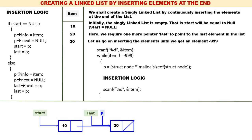Read the next item: 30. It is not equal to minus 99, so create a new node pointed by p. Start is not equal to null, so we execute the else part. p->info is equal to 30, p->next is equal to null. Last is containing the address of node 20, so last->next is equal to p, connecting 20 to 30. Now 30 is the last node, so last is equal to p.